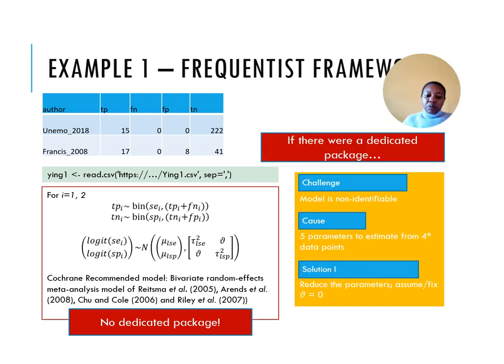And if there was a package, the model would not be identifiable because there are five parameters to be estimated from four data points. These five parameters are 1, 2, 3, 4, 5.